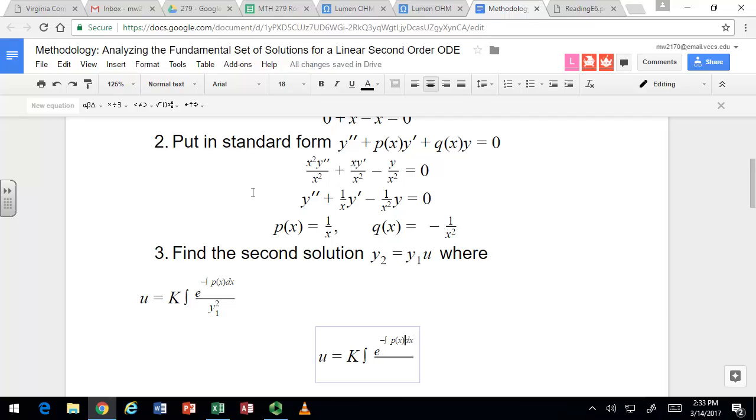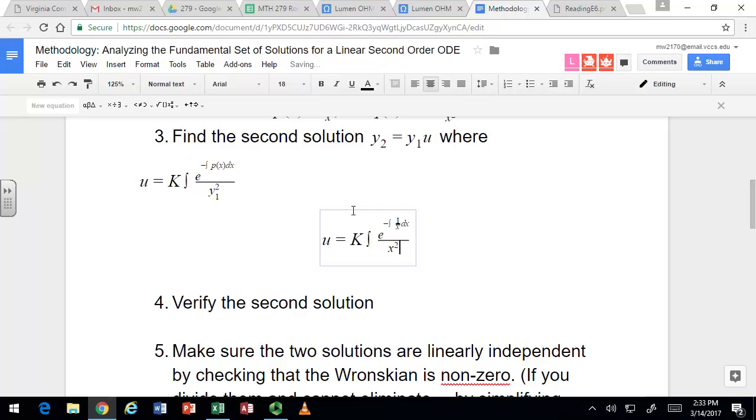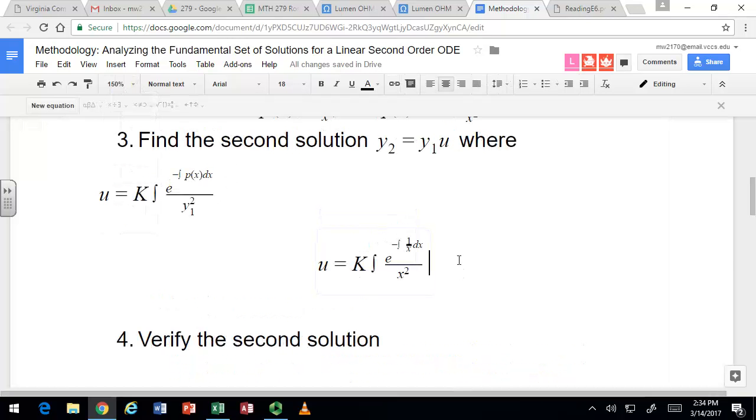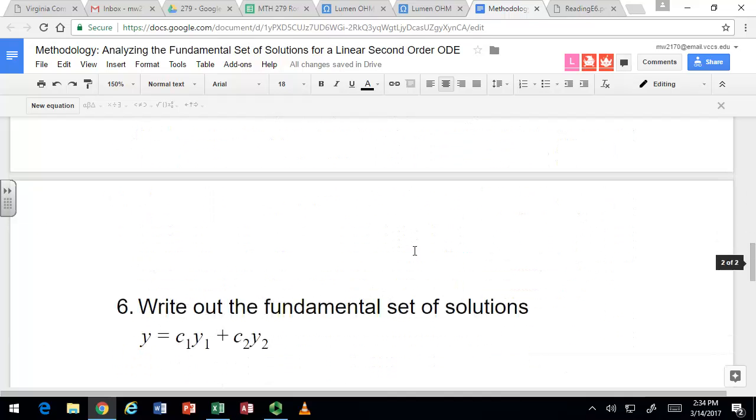So let's give this formula a try. Instead of p(x), I'm going to go ahead and put in the function 1/x. And instead of y₁², I want x². So we can do that little integral in the exponent there. Integral of 1/x is just natural log. So you just get -ln(x). We actually won't take any constants of integration on these.